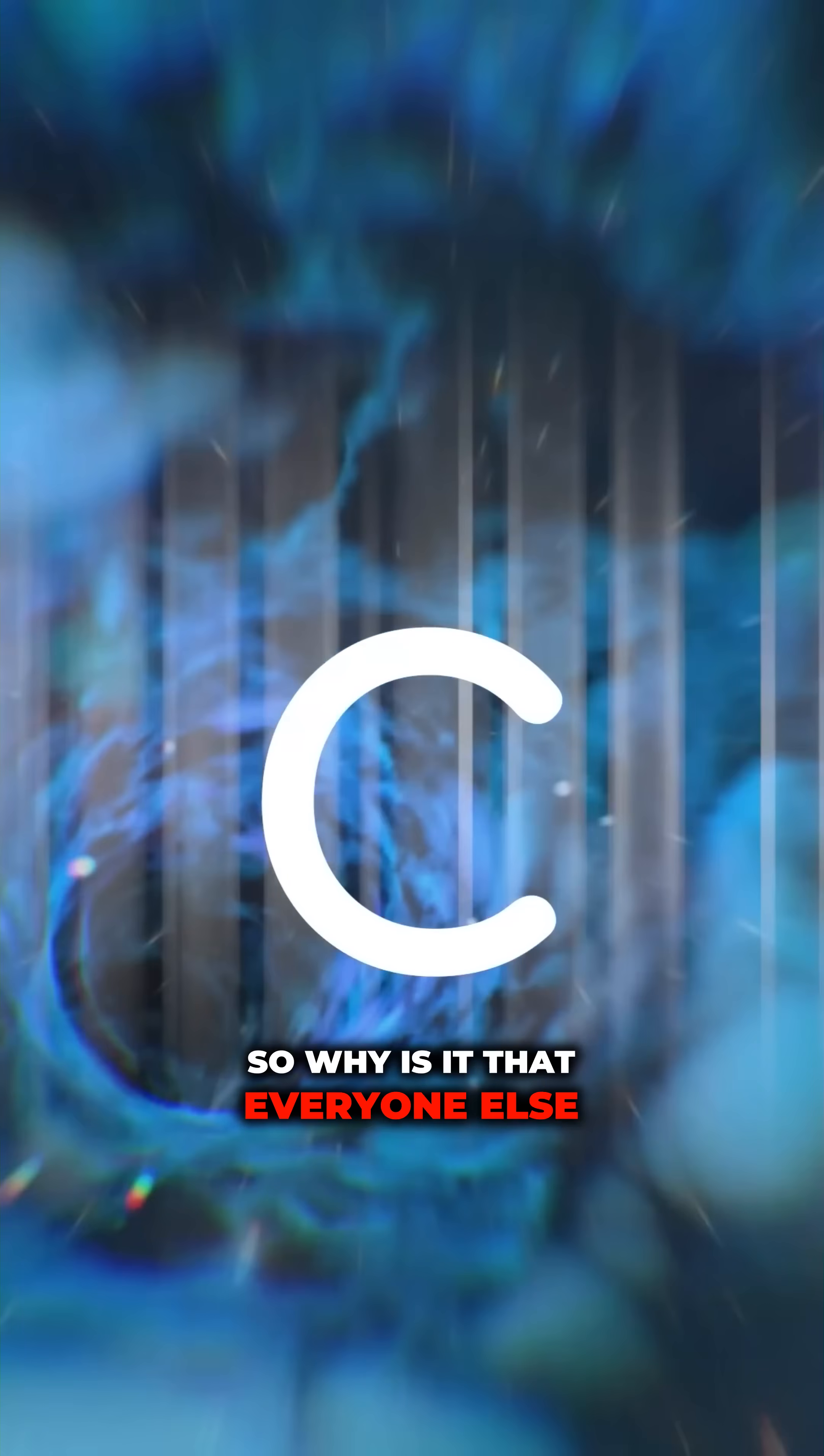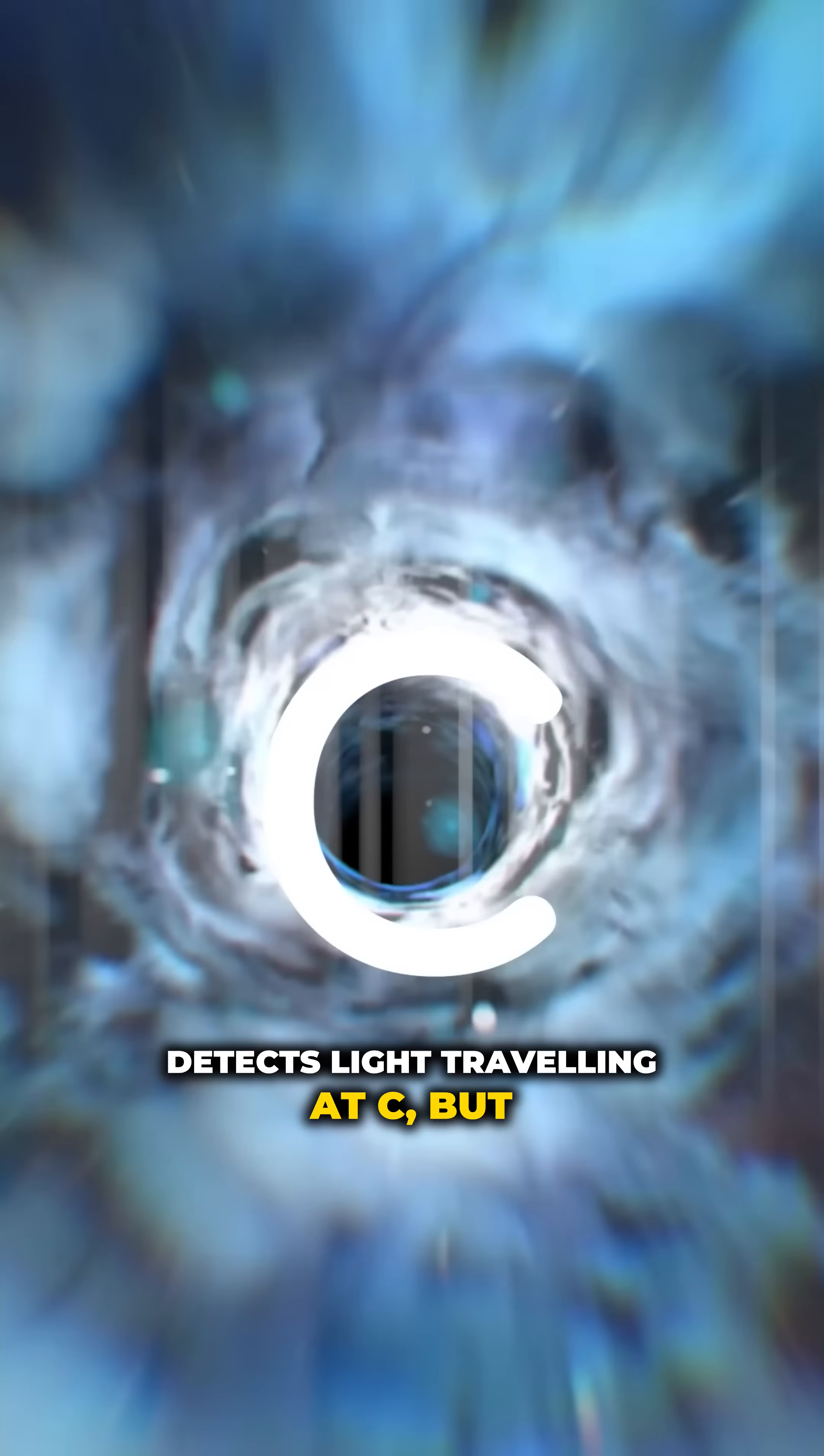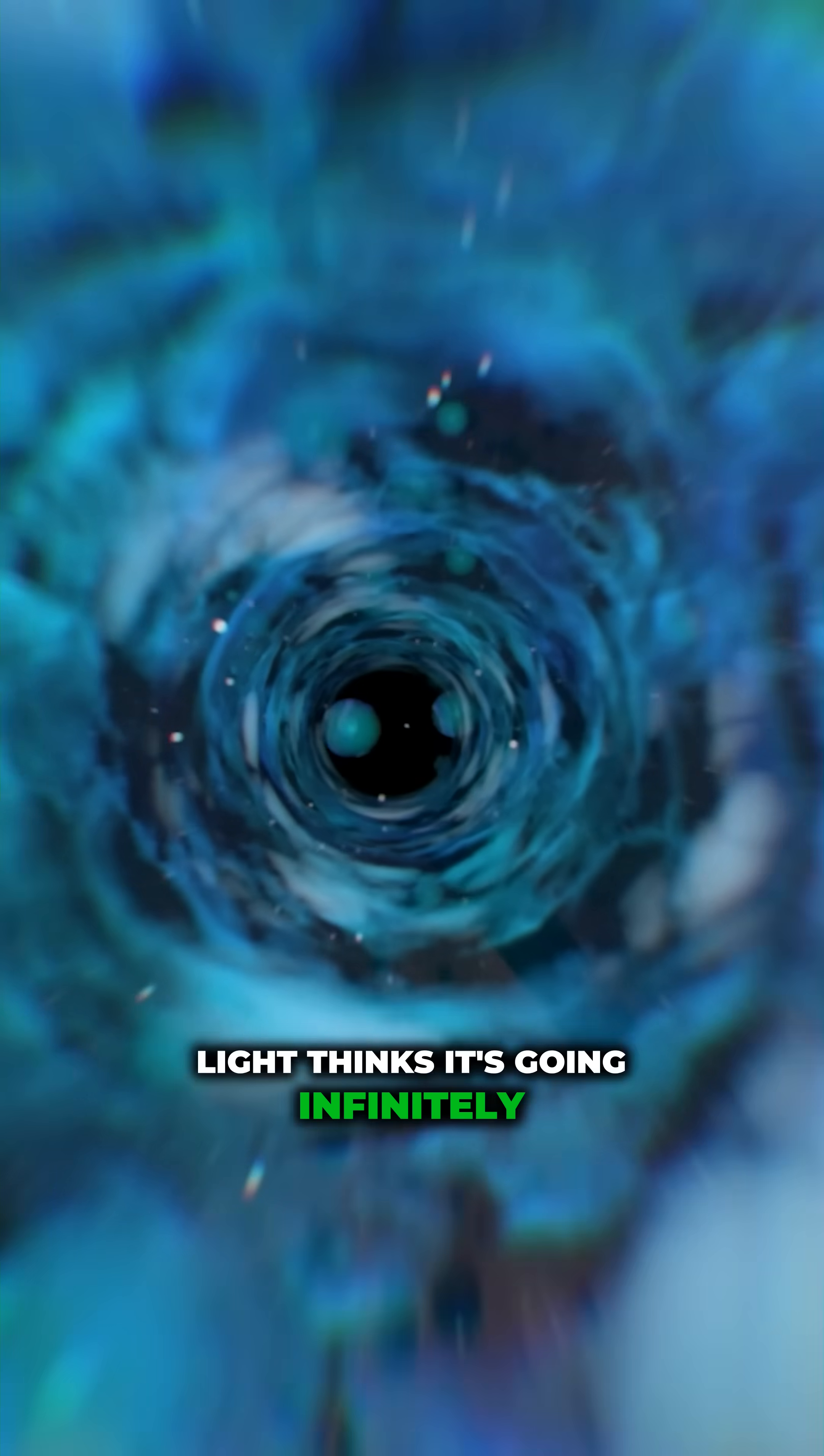So why is it that everyone else detects light travelling at c, but light thinks it's going infinitely fast?